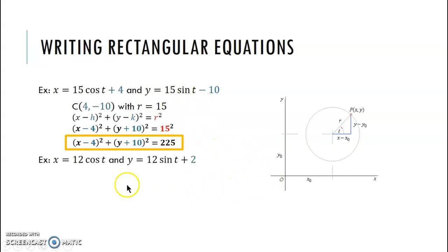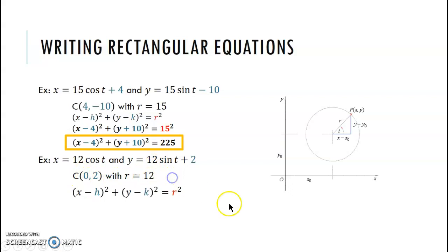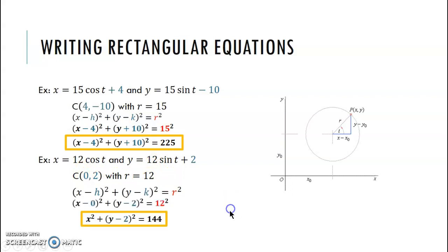Another example: x = 12·cos(t), y = 12·sin(t) + 2. The radius is 12 since it's multiplied to both cosine and sine. Nothing is added to the x equation, so h = 0. The value 2 is added in the y equation, so k = 2. Center is at (0, 2) with radius 12. Plugging in and simplifying: x² + (y − 2)² = 144.